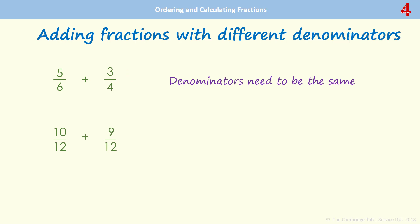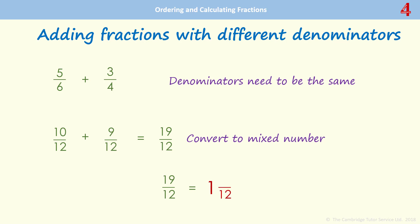Now we have the same denominators, we can add them together. 10 twelfths add 9 twelfths — how many twelfths does that equal? 10 and 9, that's 19. We'll recognise here that we have an improper fraction, so we need to convert that to a mixed number. How many times does 12 go into 19? It'll go in once, so we have one whole number. And how many twelfths are left over? We've taken away 12 twelfths, so that leaves 7 twelfths. Just check if you can simplify — in this case, you can't.